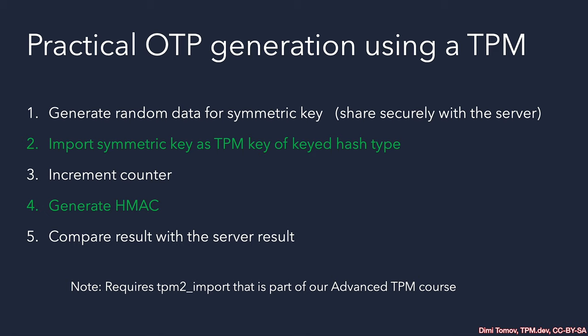For completeness, here I have outlined the flow of practical OTP (one-time password) generation using a TPM. What I recommend is to generate random data for a symmetric key and then import this key into the TPM, and on the other host securely share the random data. At this stage the secret is exchanged, and what we need is just a counter. The counter can be a file or an actual digit with ASCII representation — it is up to you and the implementation. Once the TPM key is imported and the symmetric key data is securely shared, we just need to remember to increment the counter every time we need to make a challenge and verification. As long as the counter matches on both sides, the generated HMAC should be the same.